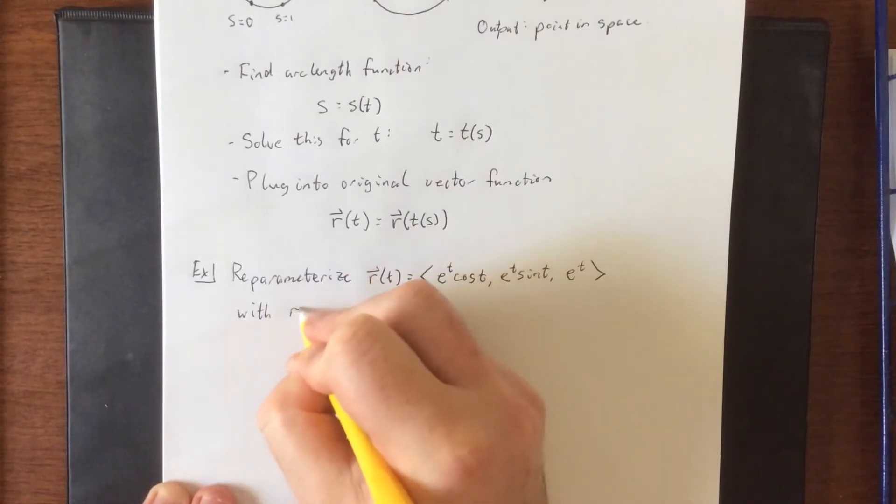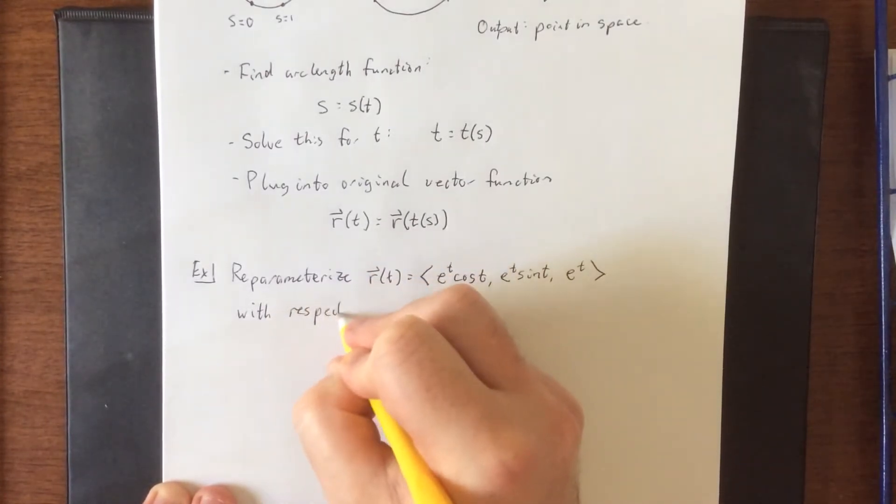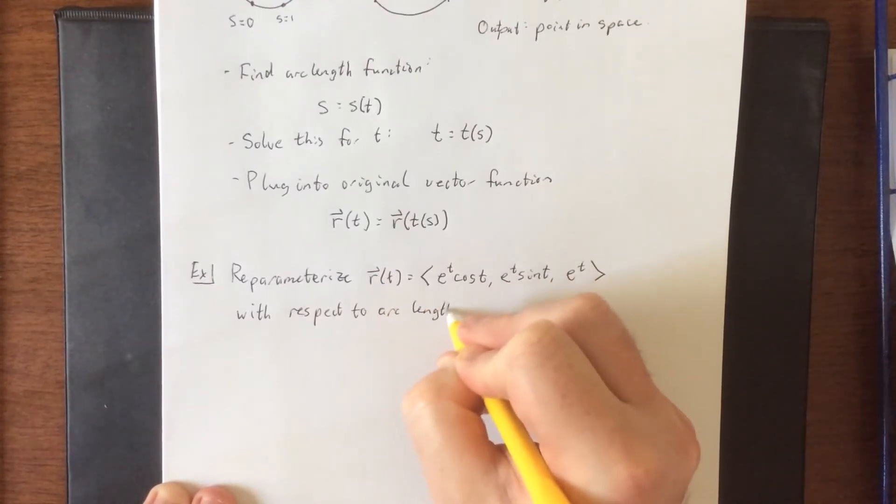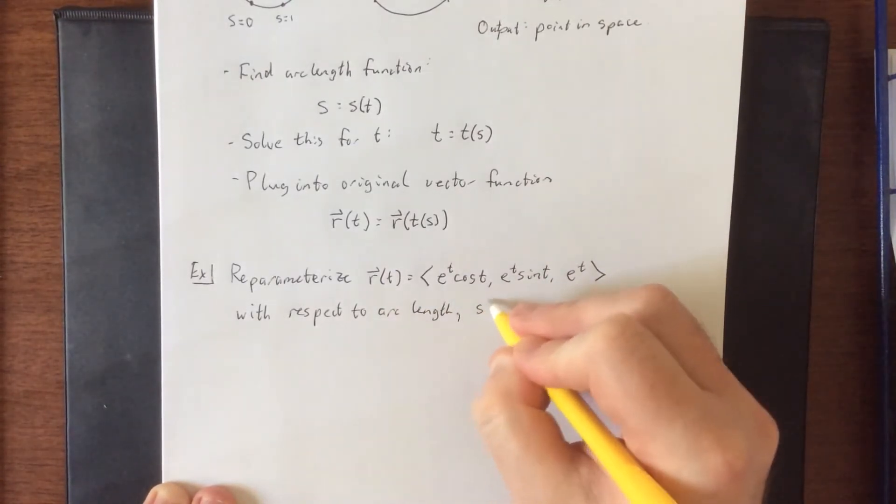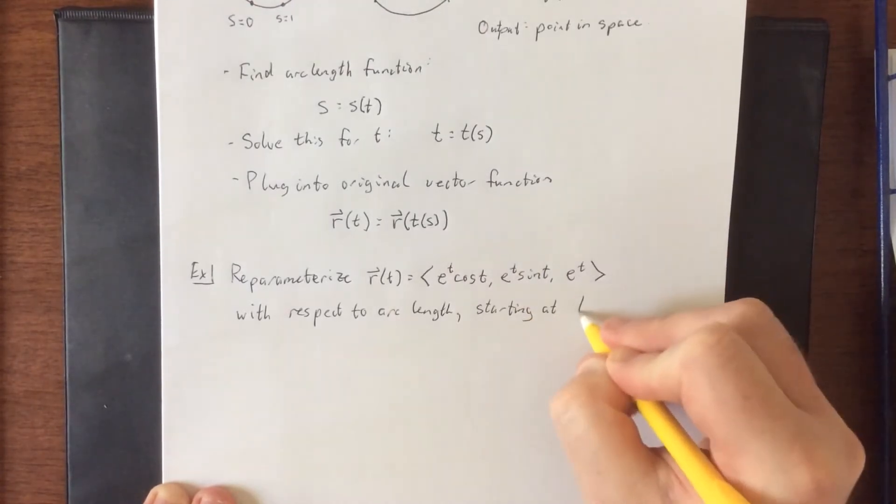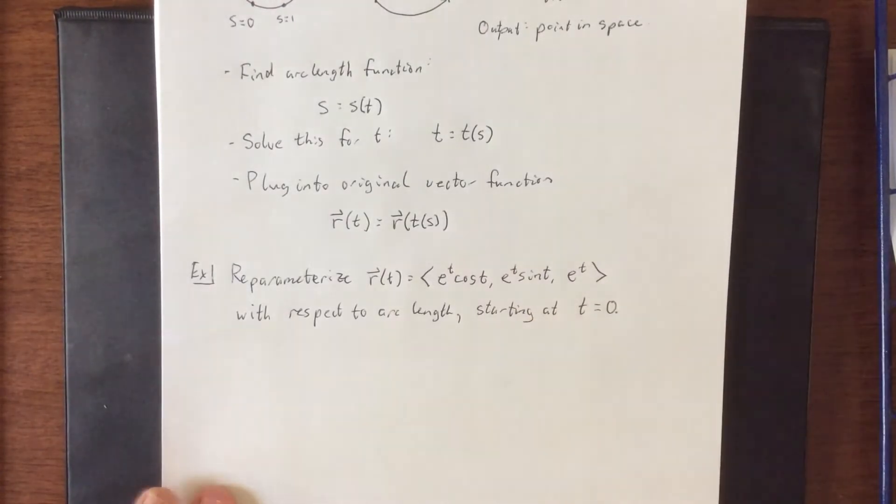With respect to arc length starting at t equals 0. That seems like a nice starting point.